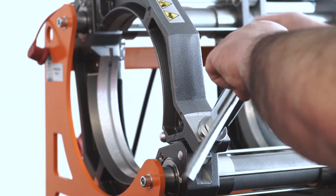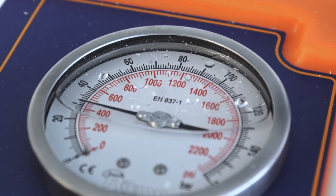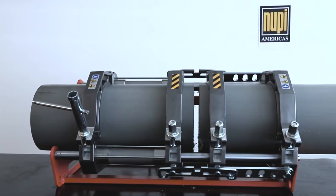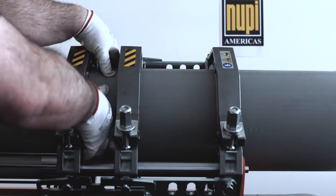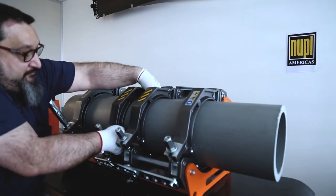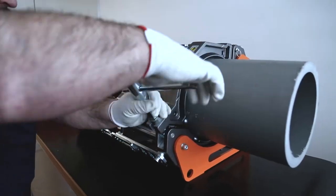This video teaches the installer the butt fusion technique for nylon piping. Butt welding involves joining pipe and fittings of equal diameter and thickness. Surfaces are heated by direct contact until they are melted by a heating element. Once heated, the parts are joined together under pressure.